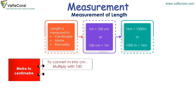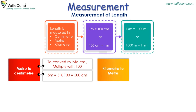To convert meter into centimeter, multiply by 100. For example, 5 meters is equal to 5 into 100, which equals 500 centimeters. To convert kilometer into meter, multiply by 1000. For example, 5 kilometers is equal to 5 into 1000, which equals 5000 meters.